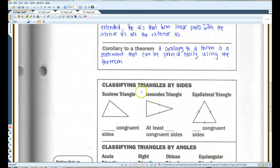Some different kinds of triangles. Classifying triangles by sides. A scalene triangle has no congruent sides. An isosceles triangle has at least two congruent sides. An equilateral triangle has three congruent sides, all congruent sides.